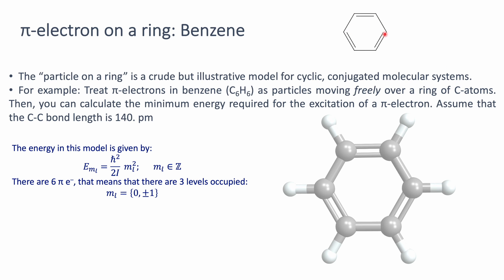Now, each of those carbon atoms is going to contribute one p electron. So in total we have six electrons available for that pi system. Each level holds two electrons, so these six pi electrons are distributed in three levels. The three lowest energy levels are occupied and correspond to quantum numbers zero and plus-minus one.